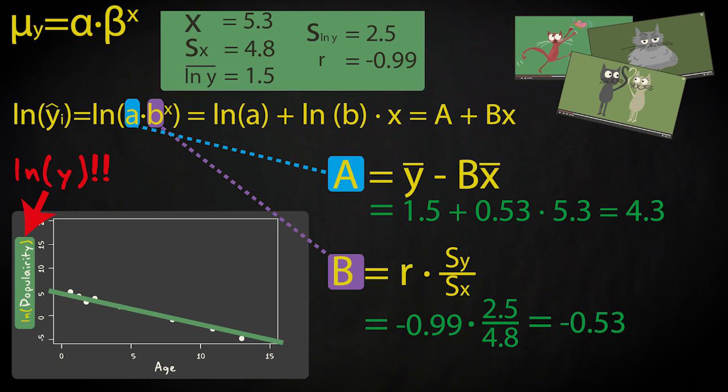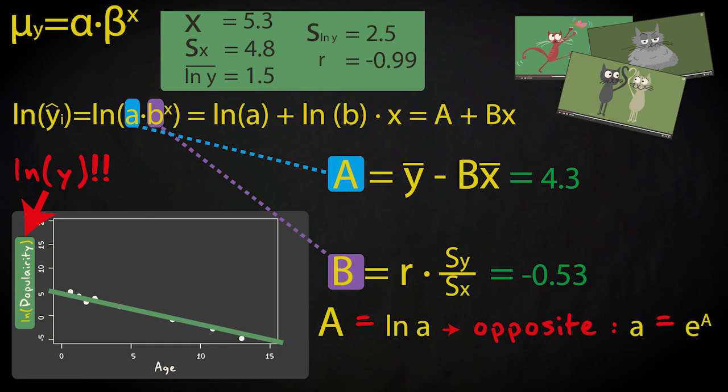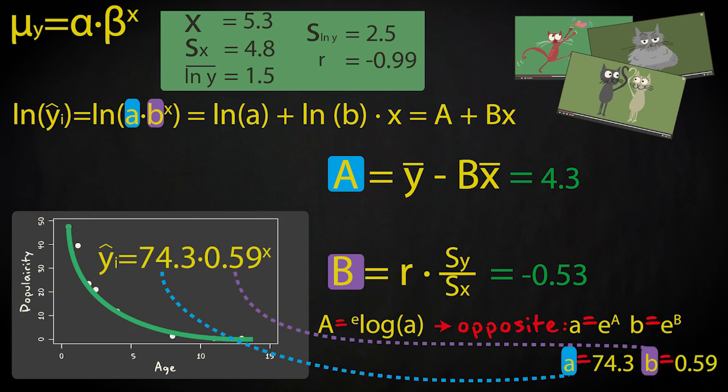We find a and b by doing the opposite of taking the log. We raise a base number to the power of A and B. What base number? Well that depends on the type of logarithm I used. If I had used 10 as a base number, I would calculate a and b by raising 10 to the power of capital A and capital B. If I use natural logs, like in the example, I find a and b by raising the number e to the power of capital A and capital B.